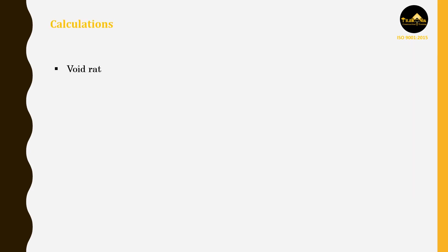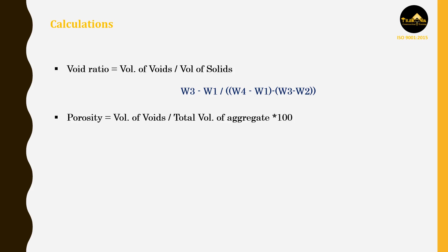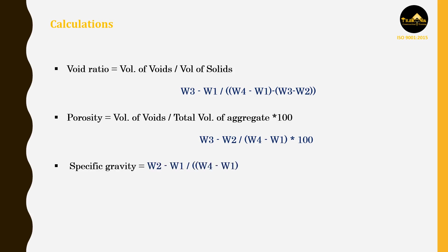Calculations: Void ratio equals volume of voids divided by volume of solids = (W3 − W1) / [(W4 − W1) − (W3 − W2)]. Porosity equals volume of voids by total volume of aggregate × 100 = (W3 − W2) / (W4 − W1) × 100. Specific gravity equals (W2 − W1) / [(W4 − W1) − (W3 − W2)]. Bulk density equals (W2 − W1) / (W4 − W1).